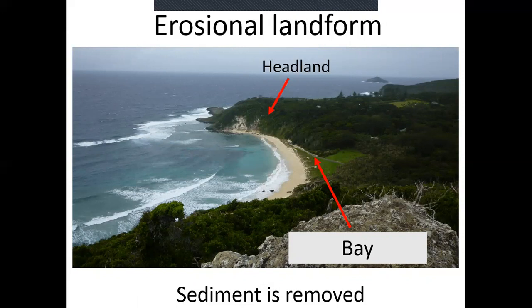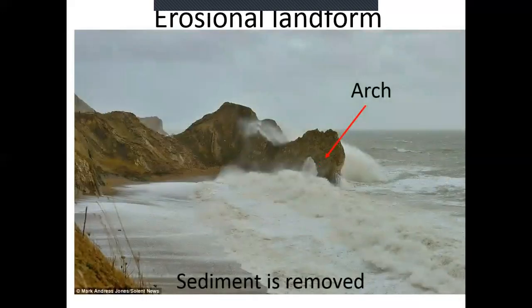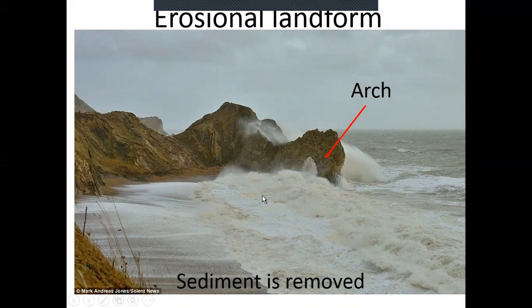An erosional landform is when sediment has been taken away and rocks have been broken down by destructive waves. Back at Durdle Door, we can see through the arch — destructive waves are hitting against it, removing bits of sediment and breaking the rocks down. So an arch is an erosional landform; sediment has been removed and taken away.